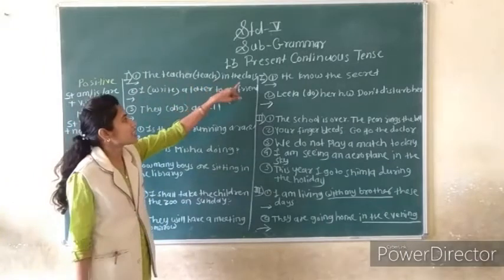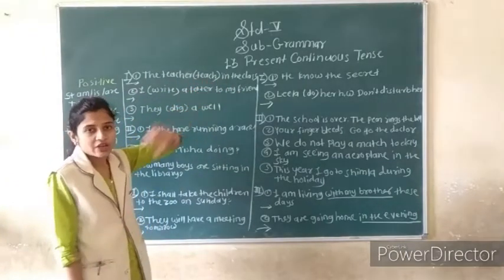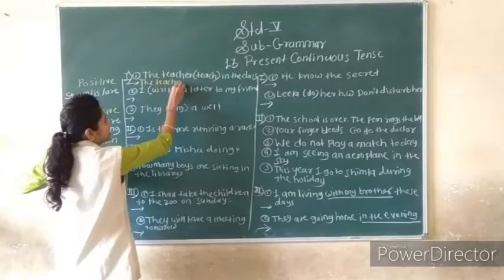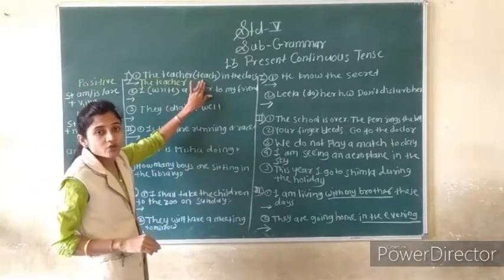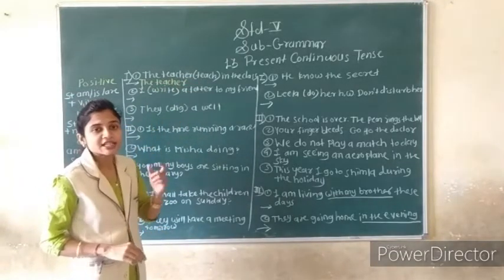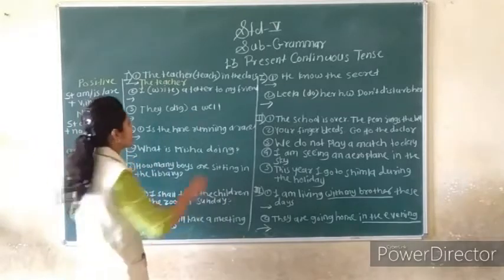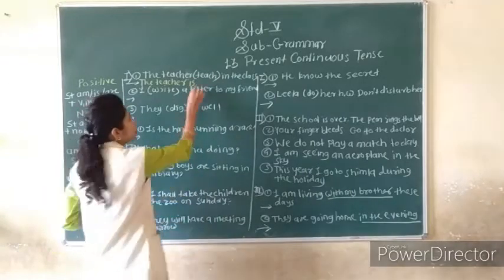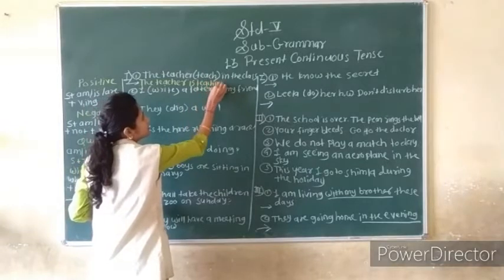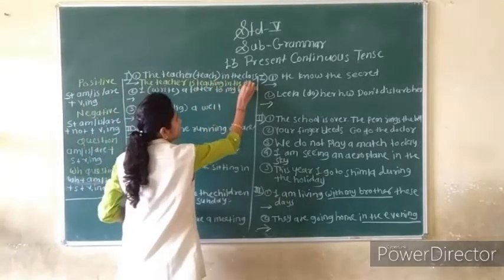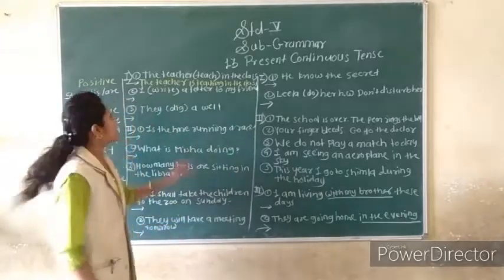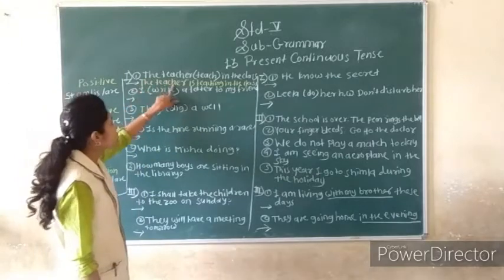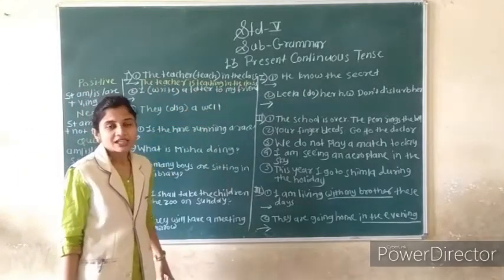The teacher teach in the class. The word 'teach' is in the bracket. 'The teacher' is singular, so you use 'is'. The teacher is teaching in the class. That is how you write it in present continuous. Do you understand? The teacher is teaching in the class — like this you can solve.